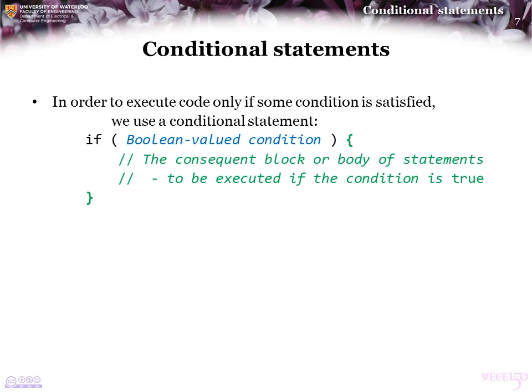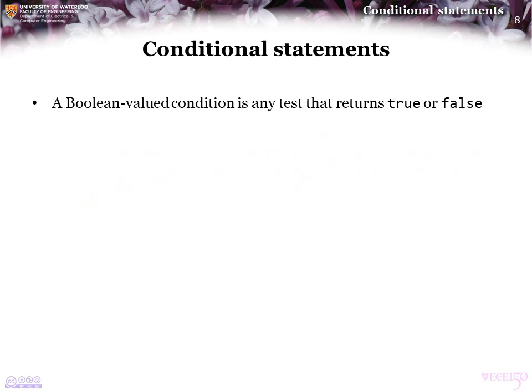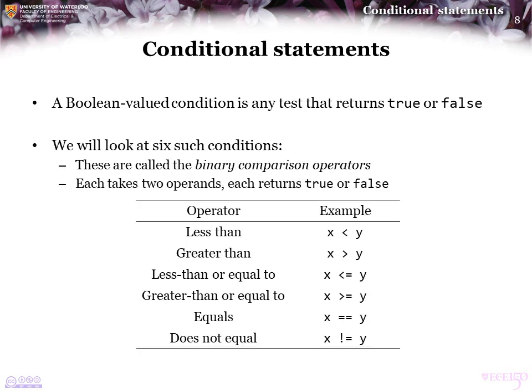In order to execute code only if some condition is satisfied, we can use a conditional statement without the else clause or alternative block — just include the consequent block. A Boolean-valued condition is any test that returns true or false. We're going to look at six such tests, called the binary comparison operators.